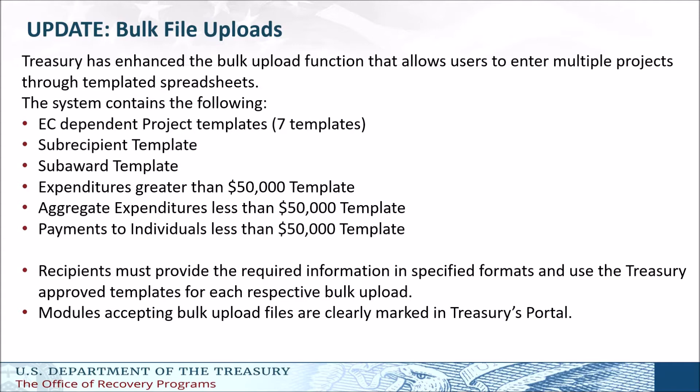Similar to what was available during the interim report, recipients will have the option of manually entering data directly into the portal or providing information via a bulk upload file that includes all relevant information in the approved process and format. Using the bulk upload function entails downloading a Treasury-provided CSV file template from the Treasury Reporting Portal and uploading the completed template into your report to create multiple records at one time. This should be used by recipients that plan to report a great deal of data that wouldn't be feasible through manually creating individual entries.